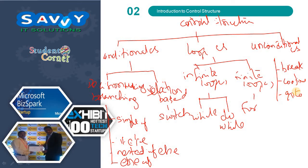This is exactly what control structures contain — one of the most important concepts in any programming language. If you understand control structures properly, you can write maximum programs very easily. Logic building and applications all depend on control structures. We will cover almost 50 to 80 programs in this section. Our goal is to explain simply if, if-else, nested if-else, else-if, switch, while, do-while, for, break, continue, and goto with many examples, explaining the syntax of each and every part.